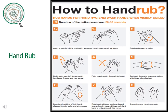This poster explains the correct steps for alcohol handrub. As mentioned, alcohol handrub is preferred when caring for a patient colonized or infected with Candida auris, only if hands are not visibly soiled. The duration of alcohol handrub is 20 to 30 seconds. Please review this poster and follow the correct steps.